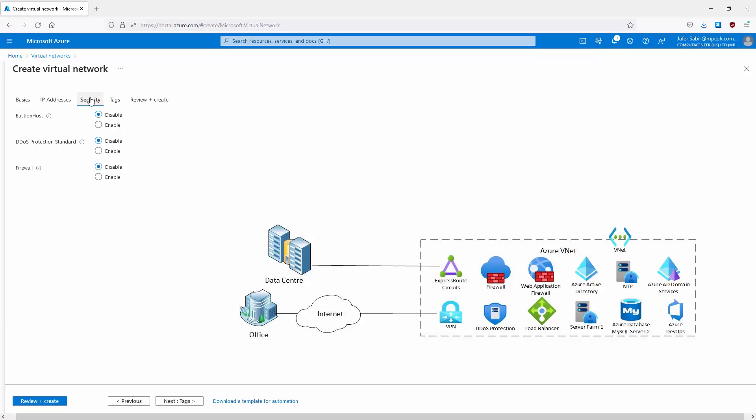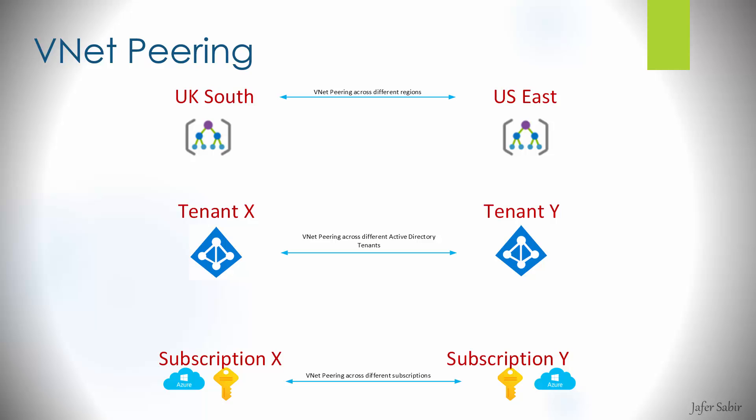You can get the virtual network connected to other virtual networks, connect it to the internet, and connect back to your on-premise offices and data centers. Connecting virtual networks together is also known as VNet peering. There's also VNet-to-VNet connection, which is like an IPsec connection — an encrypted, more secure connection — but the most common way is standard VNet peering.